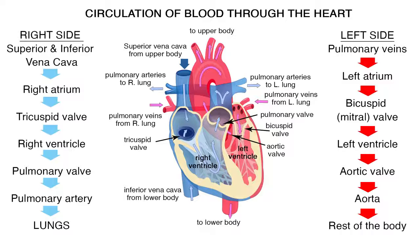Now we will follow the circulation of blood flow through the heart step by step, starting with the right side. Blood enters the heart from the upper and lower body by way of the superior and inferior vena cava. Blood flows from the right atrium, mainly by gravity, through the tricuspid valve and into the right ventricle. Blood is then pumped from the right ventricle through the pulmonary valve into the pulmonary artery and onto the lungs to be oxygenated.